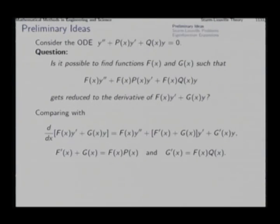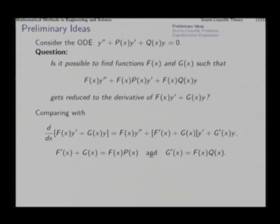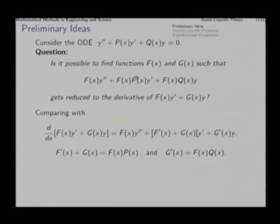We propose some f and associated g such that f times the left hand side turns out to be the exact derivative of f y prime plus g y. Differentiating exactly, we get f y double prime plus f prime y prime from the first term, plus g y prime and g prime y from the second. Matching coefficients: the coefficient of y prime requires f prime plus g equals f p, and the coefficient of y requires g prime equals f q.